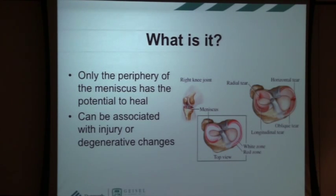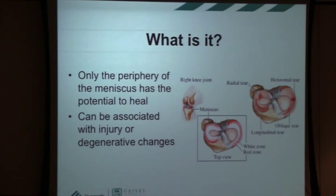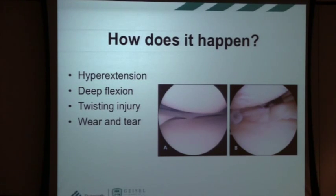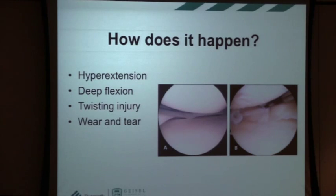Meniscus tears come in a bunch of different flavors. They can essentially be lumped into those associated with injury — traumatic tears — and those associated with degenerative tears. Either something acute happens and you end up with a tear, or the wear and tear of your knee creates a rough surface that eats away at the meniscus. Acute tears typically involve some sort of hyperextension or deep flexion injury at the extremes of knee motion, or a twisting injury, and wear and tear can happen just with arthritis in the knee.